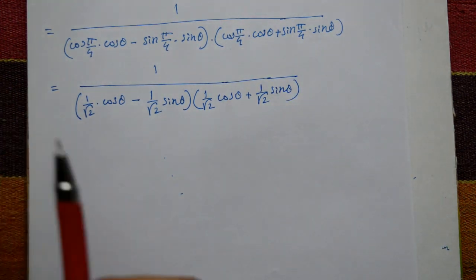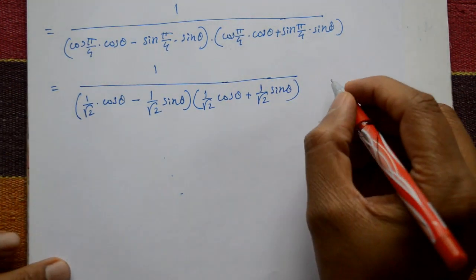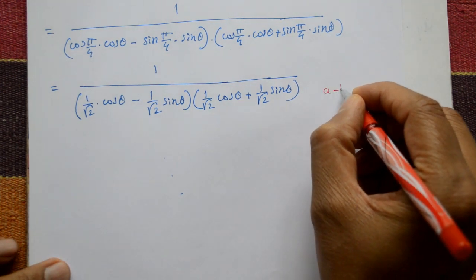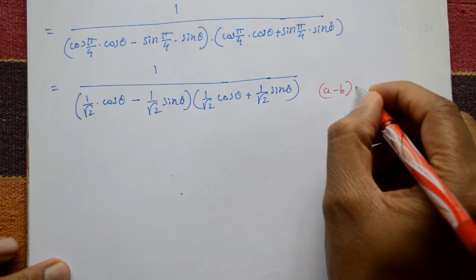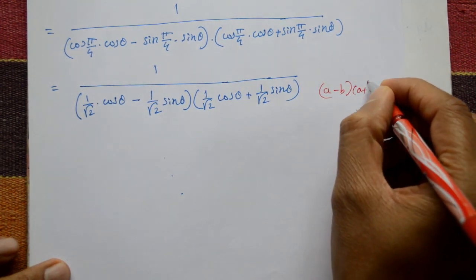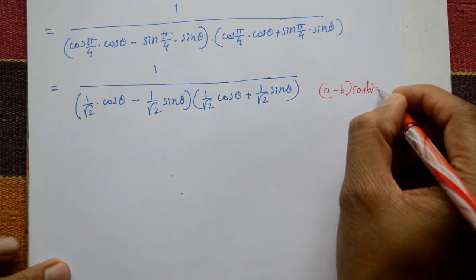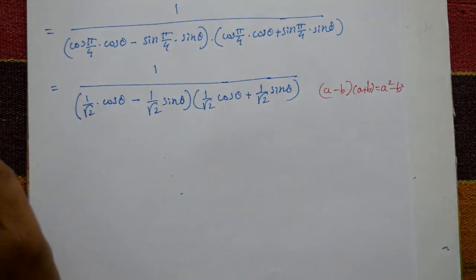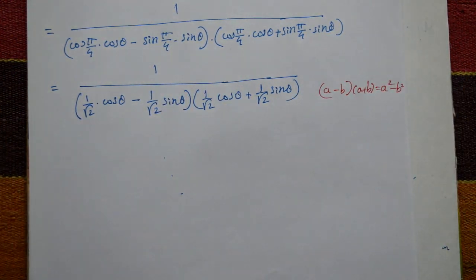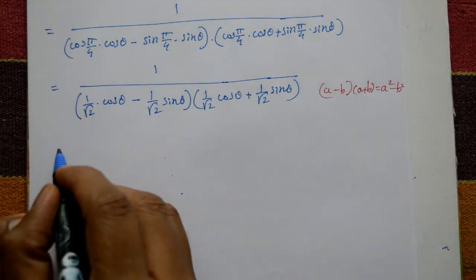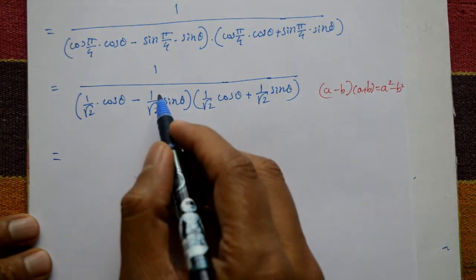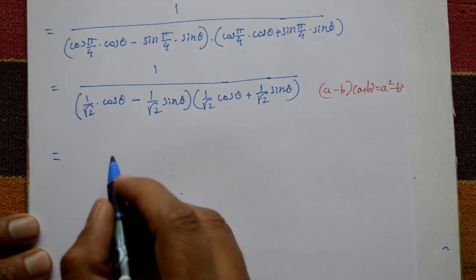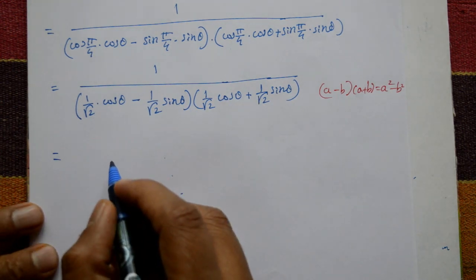We know the basic formula: (a − b)(a + b) = a² − b². We can see that the two brackets are of the form (a − b)(a + b), so this is equal to 1 upon (a² − b²).